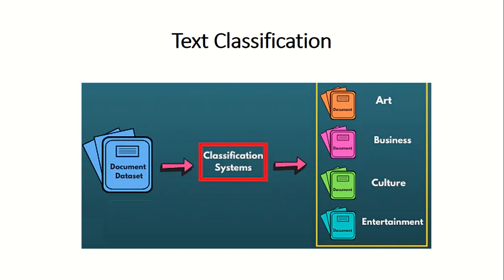Suppose you have a text dataset and you want to do classification. The first question that comes to mind is: which model should I use? You have many machine learning models and many deep learning models for text classification. Which one to use for your dataset? That is the first question for a beginner. You need to be an expert in selecting the model, and you want to fine-tune it to get the best accuracy. There are a lot of models — whether to start with machine learning or deep learning, there comes a confusion.